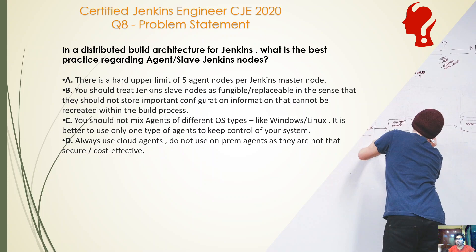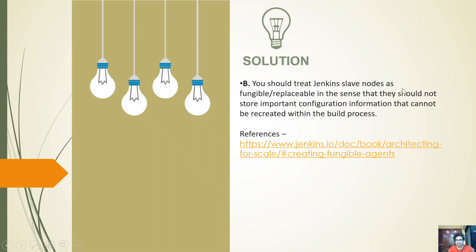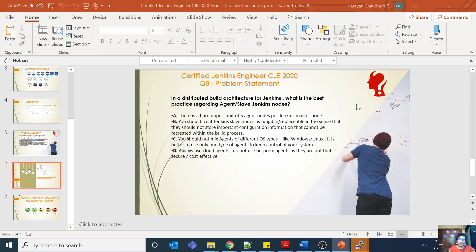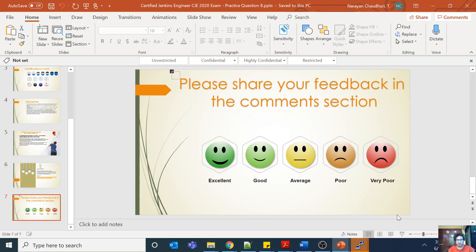Option D — always use cloud agents and never use on-prem agents — is also incorrect. You might need on-prem agents, for example if there is a database your on-prem application needs to access that a cloud agent would not have access to. So the answer is B: you should treat Jenkins slave nodes as fungible or replaceable in the sense that they should not store important configuration information that cannot be recreated within the build process. Thank you everyone, please share your comments.